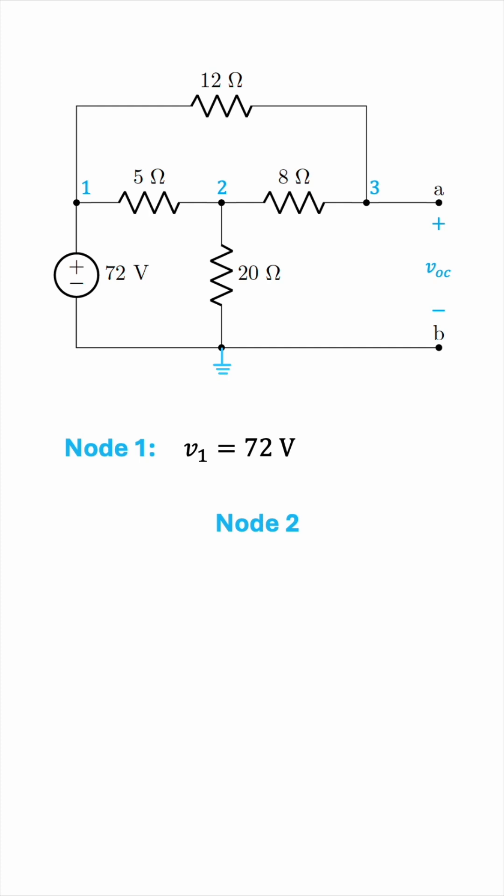Let's assign current directions. Based on the polarity of the voltage source, it seems reasonable to assume that we have this current entering node 2, this current leaving node 2 heading towards node 3, and this current leaving node 2 heading towards ground. So, the current entering is given by V1 minus V2 all over 5, the current leaving heading towards ground is given by V2 over 20, and the other current leaving, heading towards node 3, is V2 minus V3 all over 8.